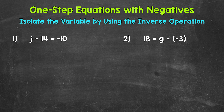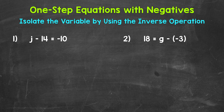When we solve one-step equations with negatives, we solve them the same way we solve one-step equations that have only positives. We want to isolate the variable, which means get it by itself. We do this by using the inverse operation, which means the opposite operation — we want to undo whatever is being done to the variable so it is by itself on one side of the equation. Just remember, whatever is done to one side of the equation must be done to the other in order to keep everything balanced and equal.